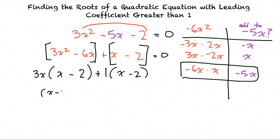Write x - 2 on the outside. And we factor out x - 2 from both parts of the equation. That will leave us with 3x plus 1. And of course, this all equals 0.